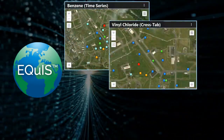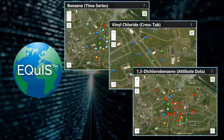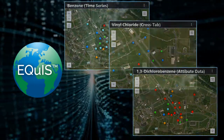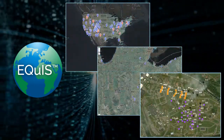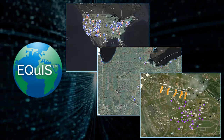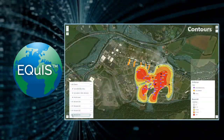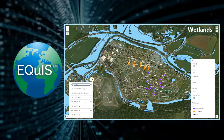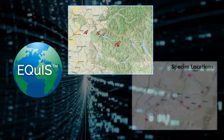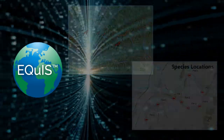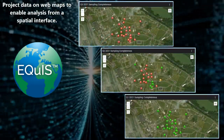Visualizing data spatially on a map is an important tool in a scientist's arsenal for data analysis. Aggregating information about a site and seeing the data from an aerial view is immeasurably useful. Using Equus as your environmental data management software, map widgets project data stored in Equus on web maps, enabling users to analyze and report data from a spatial interface.